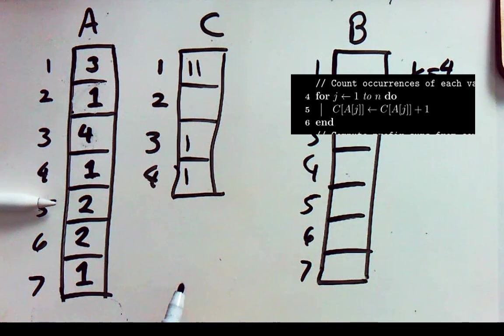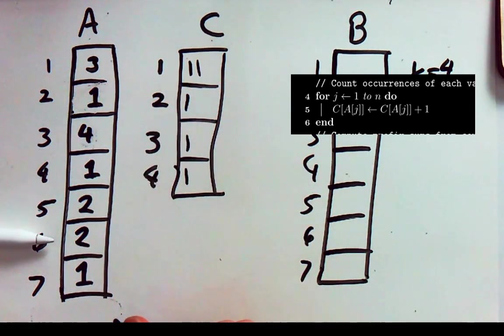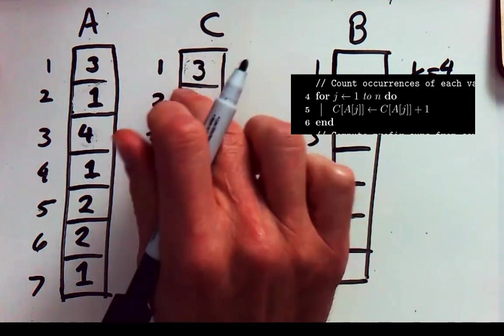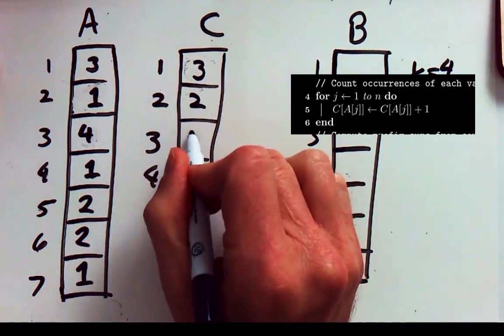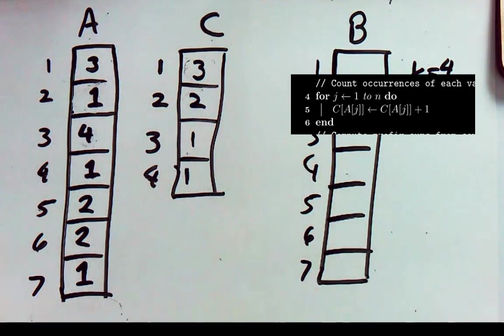Then we move on to the next item. We get to 2. We haven't seen any of those yet so we put our first tally mark in there. Oh there's another 2. We've now seen 2 of them and now we get to a 1 and we've now seen 3 1s. So we're now essentially done with the second phase of our algorithm but in reality our algorithms keeping track of these not with tally marks but with totals. So we've seen 3 1s, 2 2s, a single 3 and a single 4.